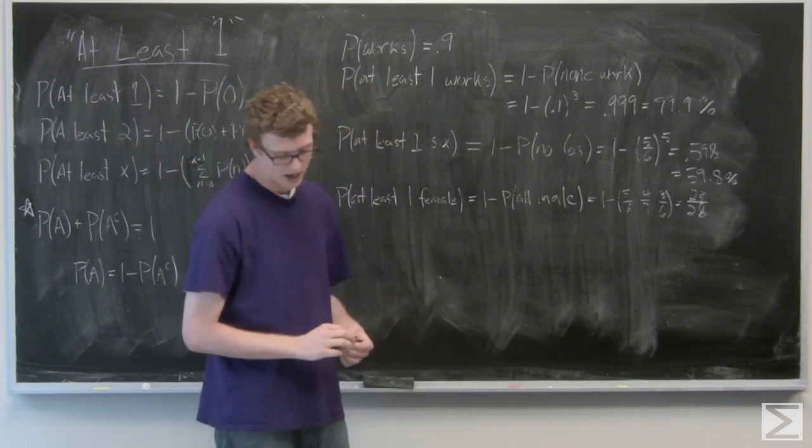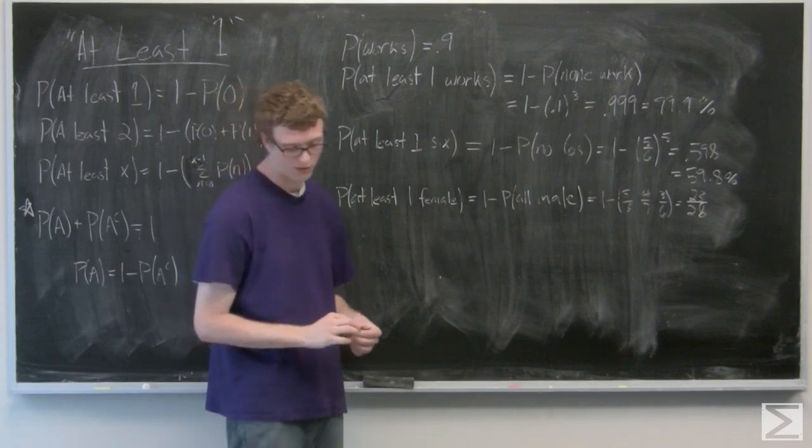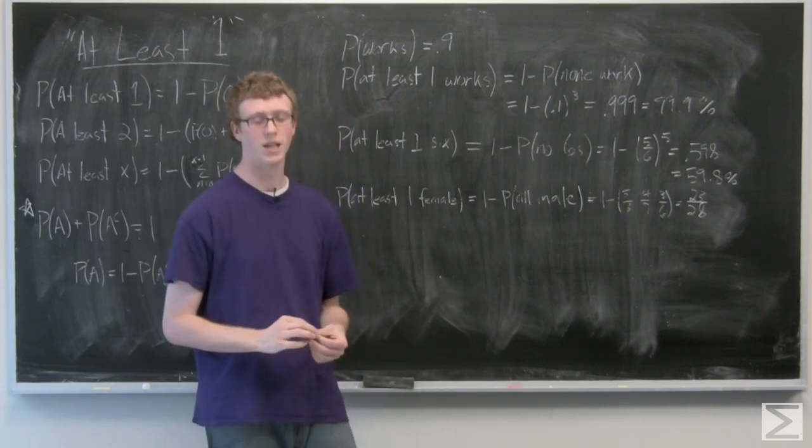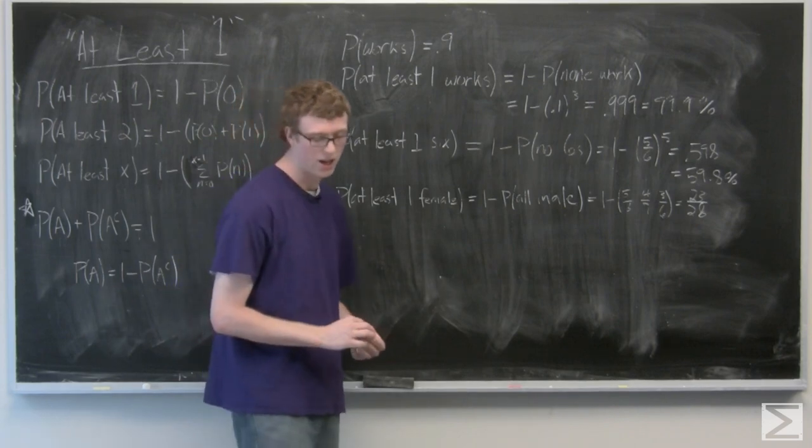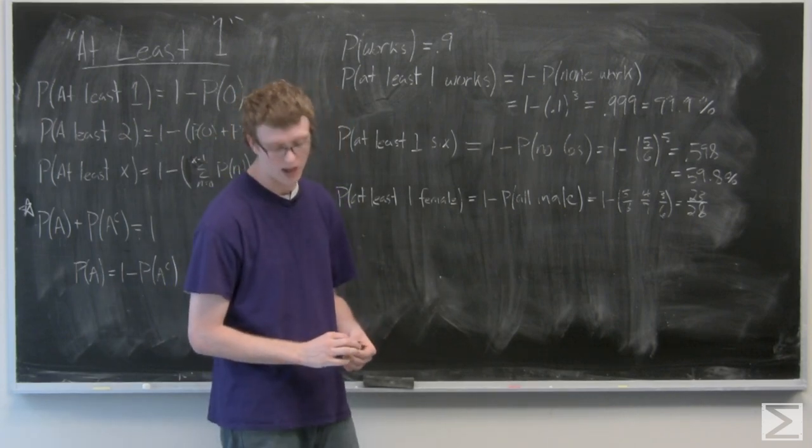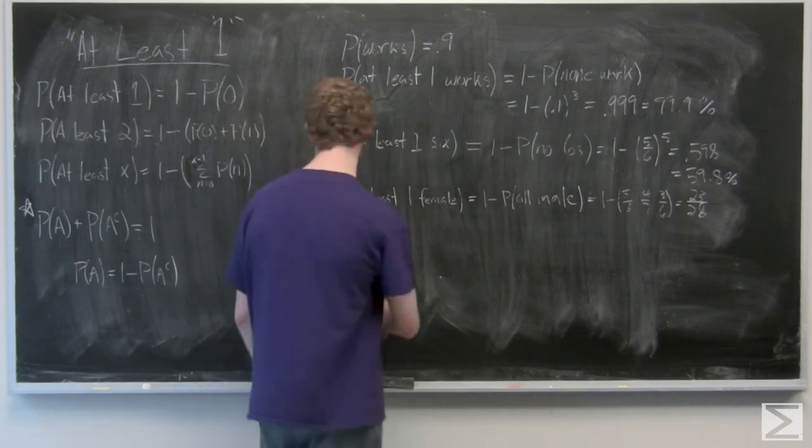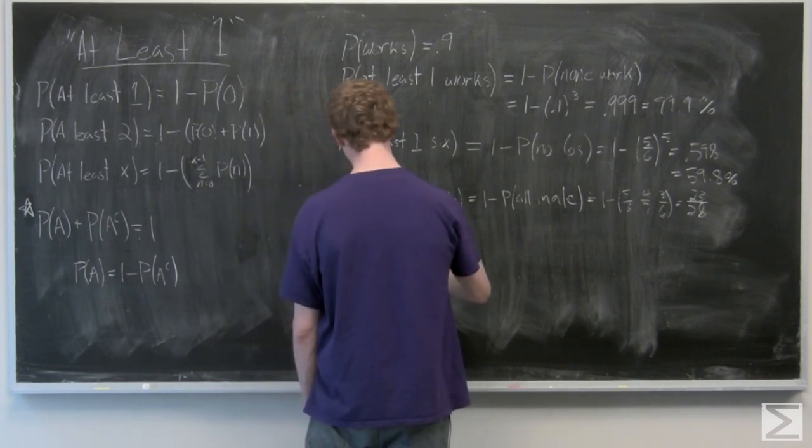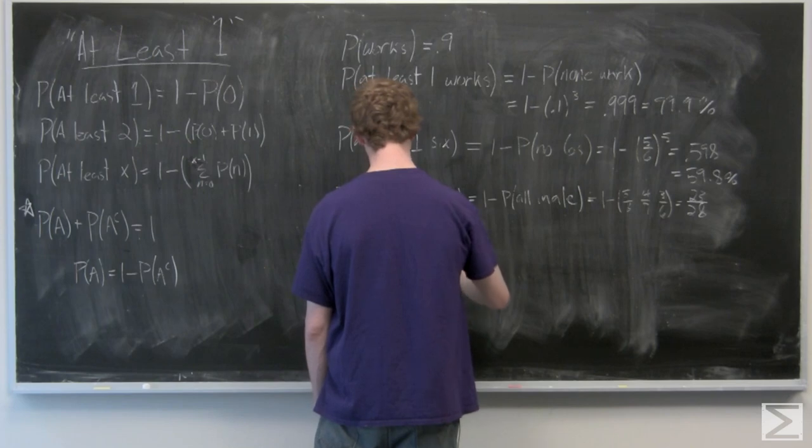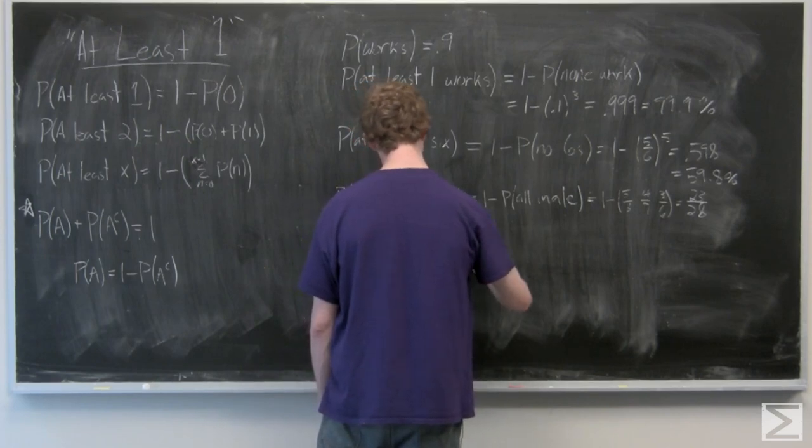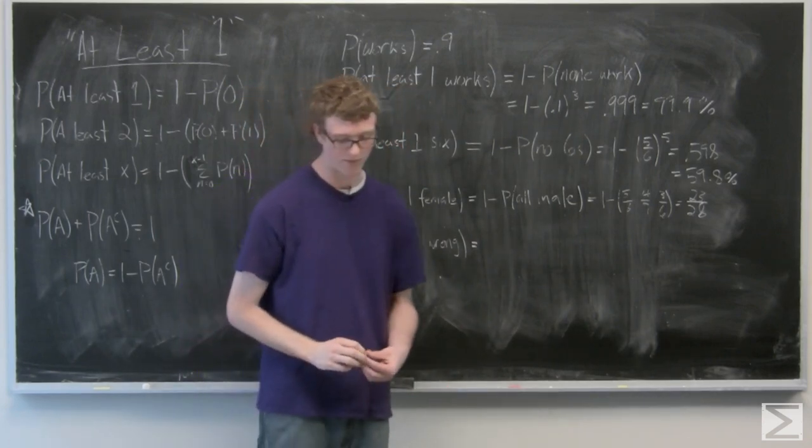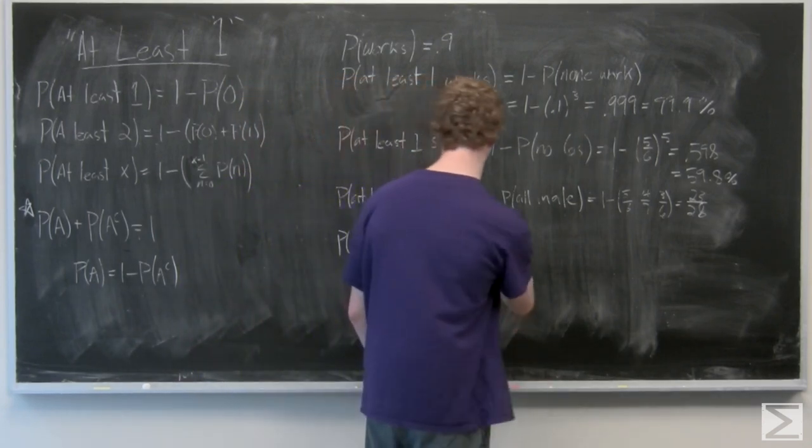The last one we're going to look at, a teacher gives a pop quiz with four questions that are true or false. And we have a student who has no idea what they're doing. So they guess at each and we're going to find the probability that they get at least one wrong. Well, that's one minus the probability that they get them all correct, which probably isn't going to happen.